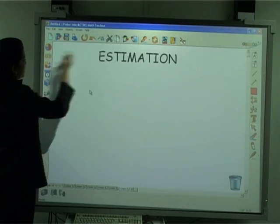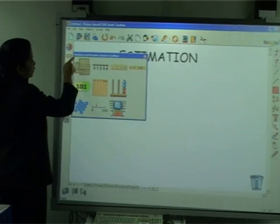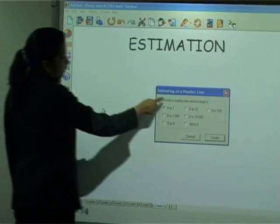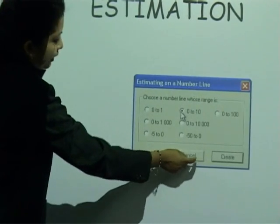If you want to teach estimation in a number line, you can get that from the number and number system toolbox. I can choose a number line from 0 to 10.